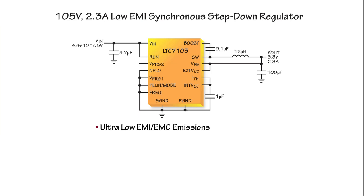To avoid radio interference, the LTC7103 operates at a constant frequency which can be set between 200 kHz and 2 MHz or synchronized anywhere in this range using the internal phase-locked loop.